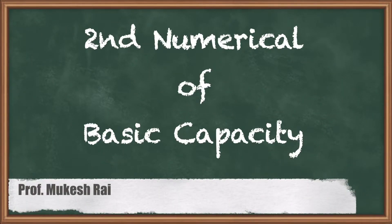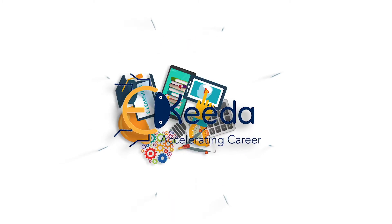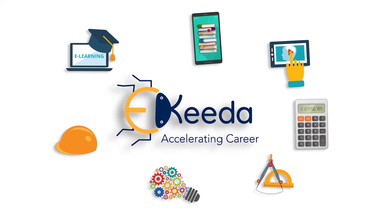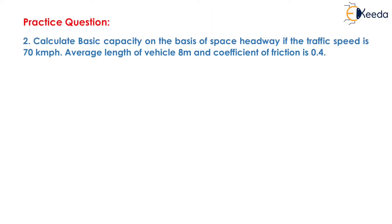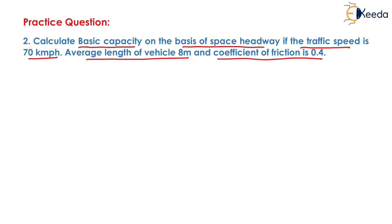Hello students, today we are going to solve the second numerical of basic capacity. The question is: calculate basic capacity on the basis of space headway if the traffic speed is 70 km per hour, average length of vehicle is 8 meters, and coefficient of friction is 0.4.